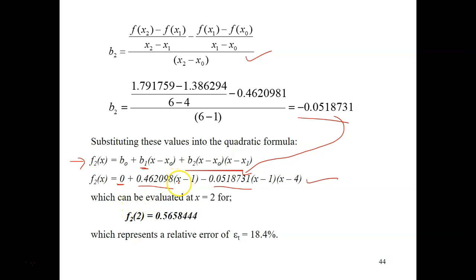So, we can substitute the value of x now. x equals to 2. So, just substitute 2 minus 1. 2 minus 1. Here. And 2 minus 4. And calculate everything. So, we get the final answer as 0.5658444.